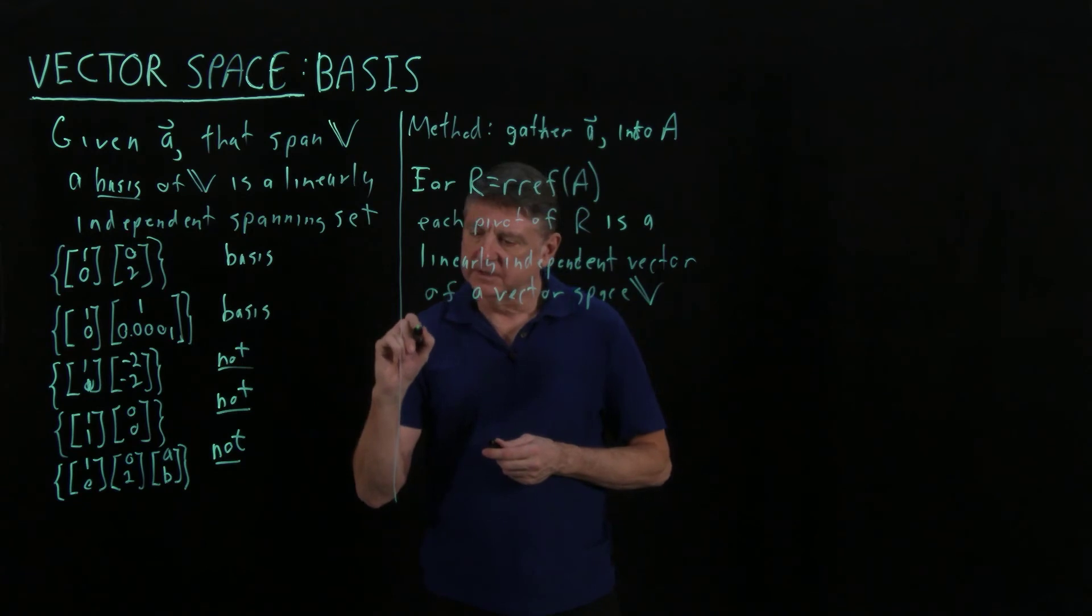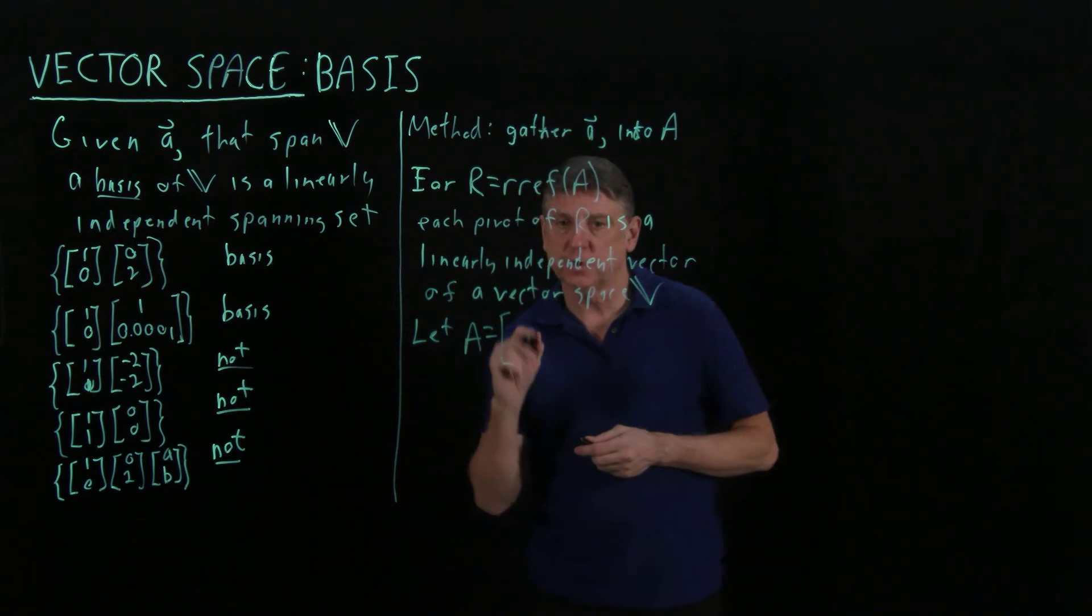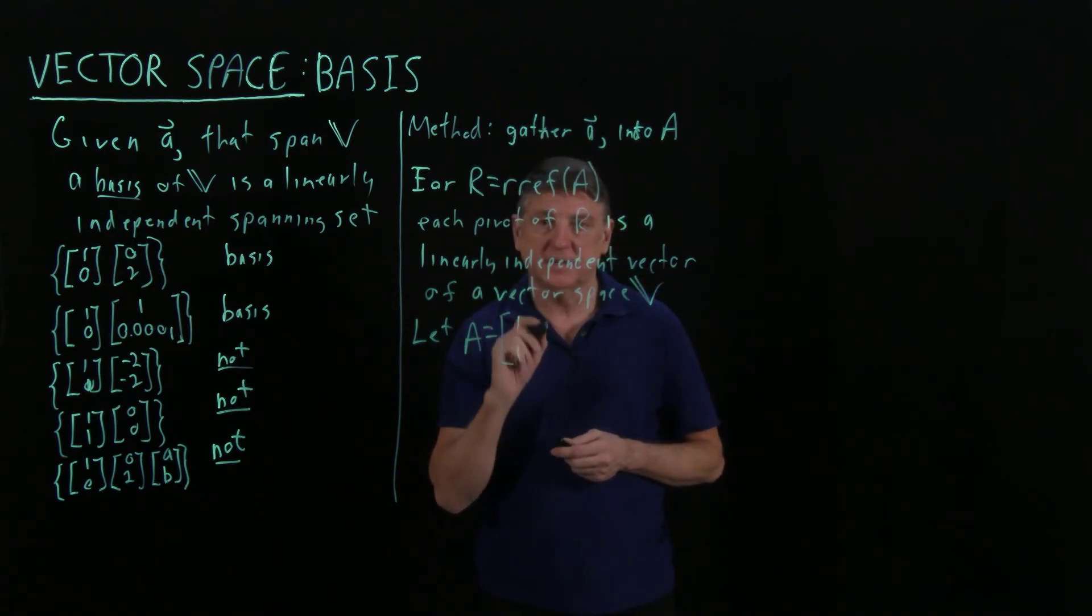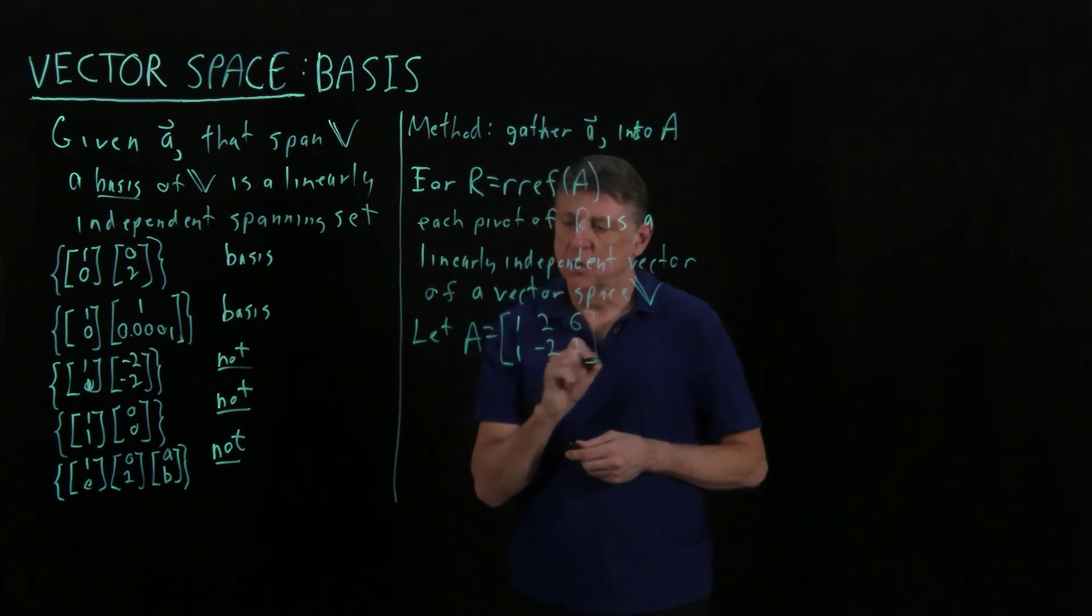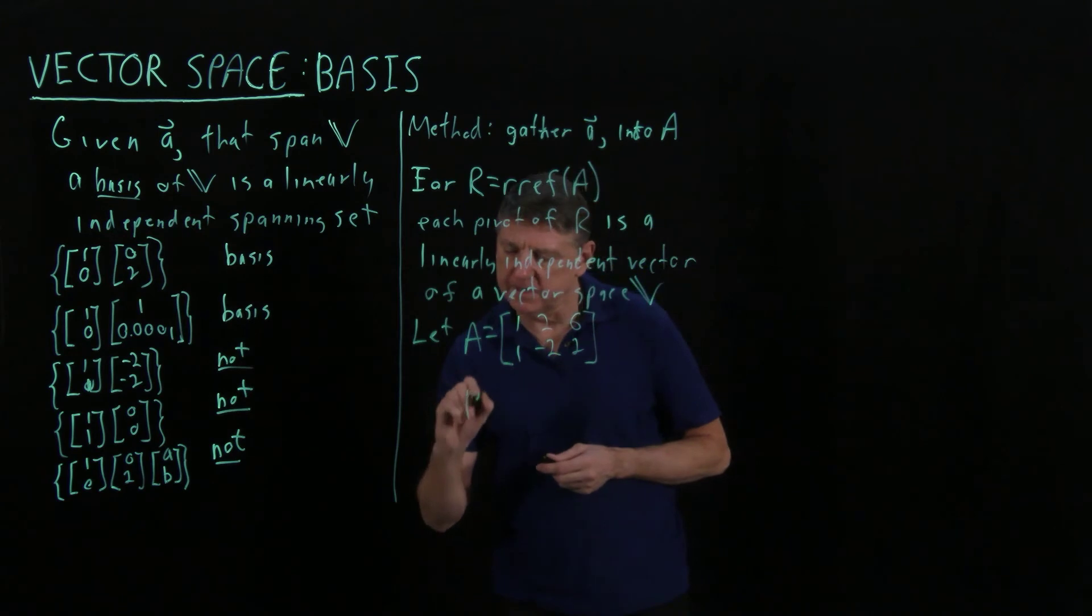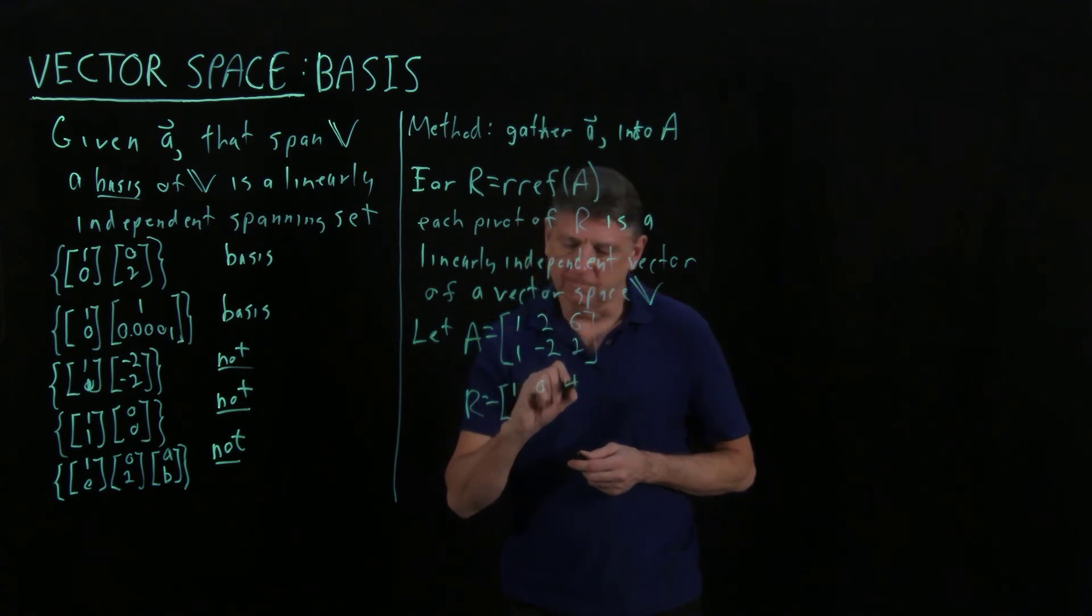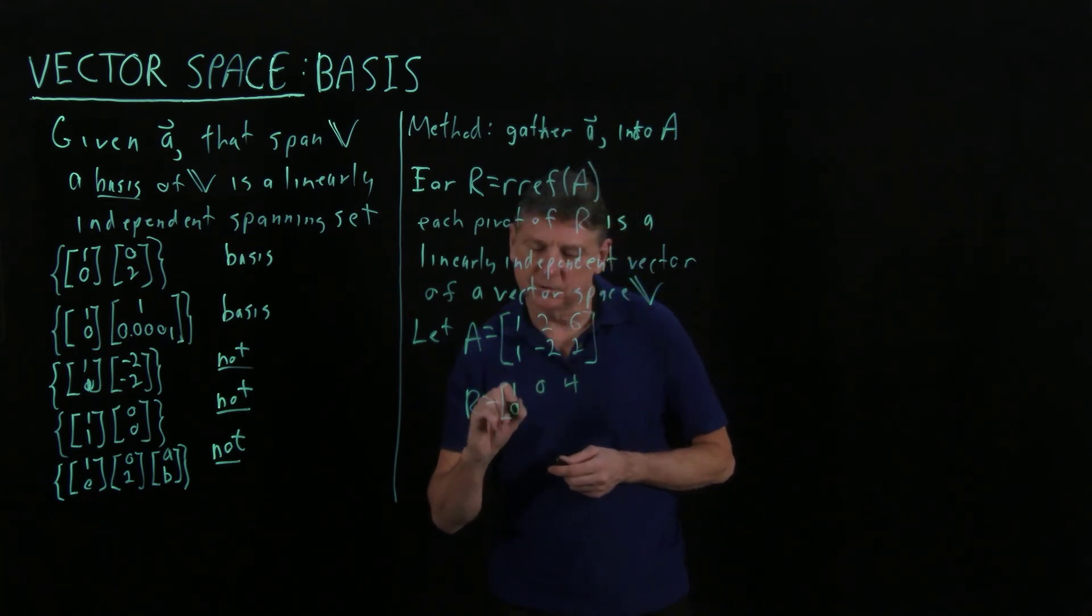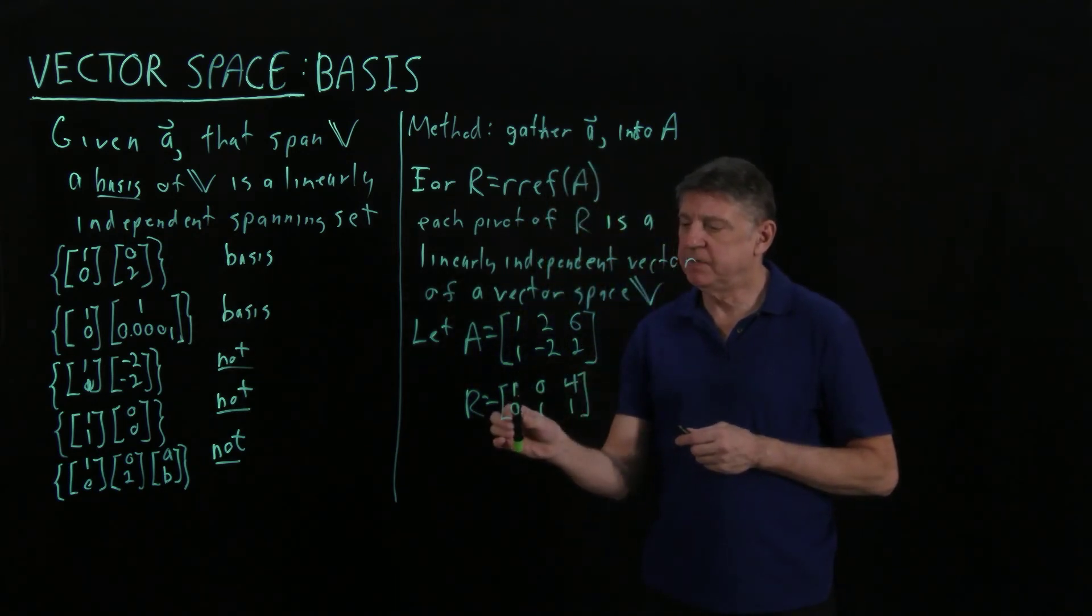Suppose our matrix A is [1, 1], [2, -2], [6, 2]. When I take the RREF, I find that the RREF of this is [1, 0, 4], [0, 1, 1]. I can see immediately that that means that this is a pivot, so the first column of A is part of a basis of a vector space.